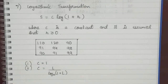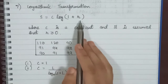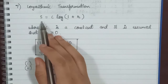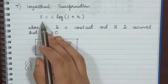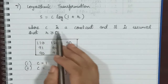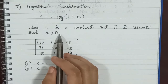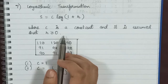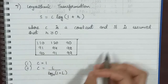The formula for logarithmic transformation is s = c · log(1 + r), where s represents the pixel values of the output image, r represents the pixel values of the input image, c is a constant, and it is assumed that r is greater than or equal to 0.